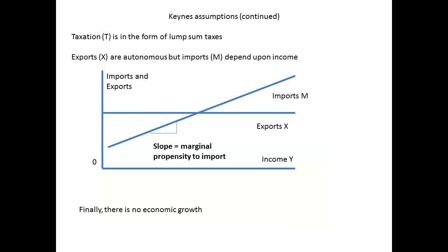Further assumptions include that taxation would be considered in the form of a lump sum, which probably oversimplifies but makes the model easier to follow. Exports were considered to be independent of income, so they can be represented by a straight line. Imports were seen as being dependent upon income — the higher the national income, the greater the import of goods and services.